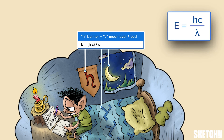Energy equals Planck's constant times the speed of light over wavelength. And to remind you of this formula, the h-banner and the c-moon are over the lambda bedspread.